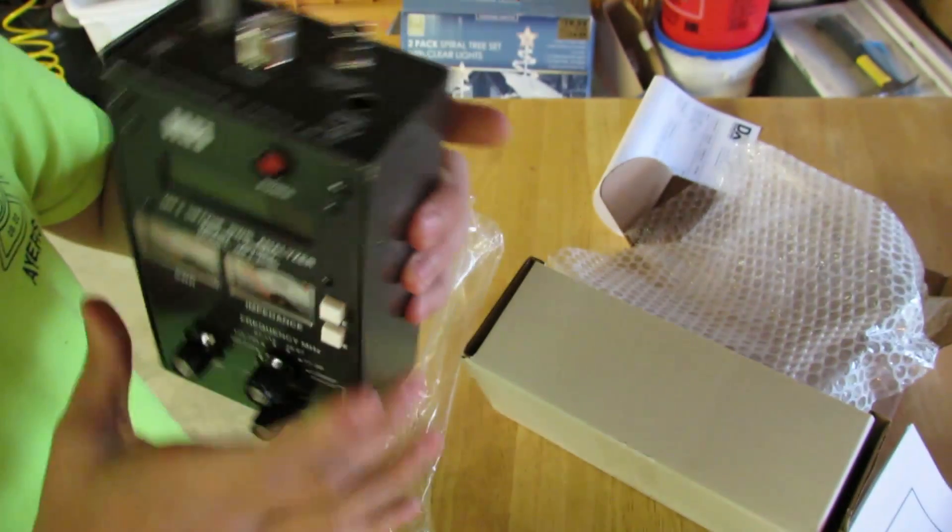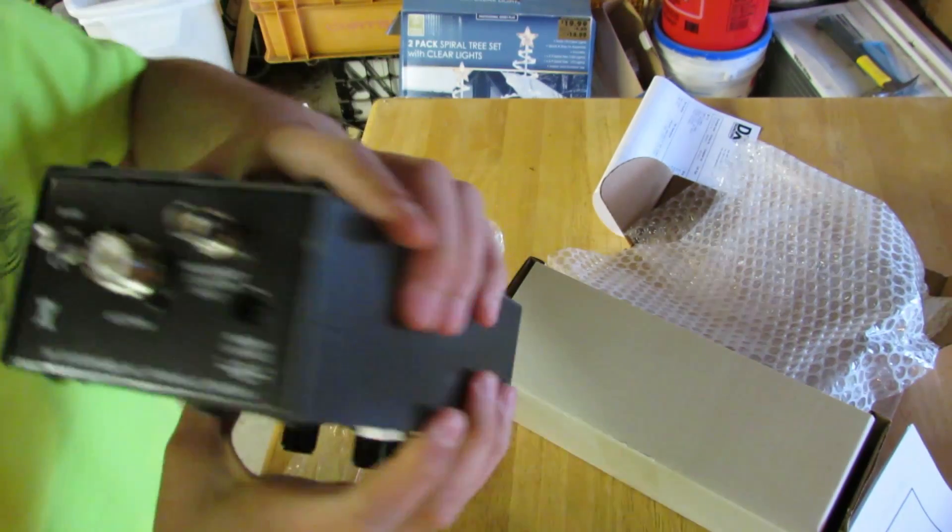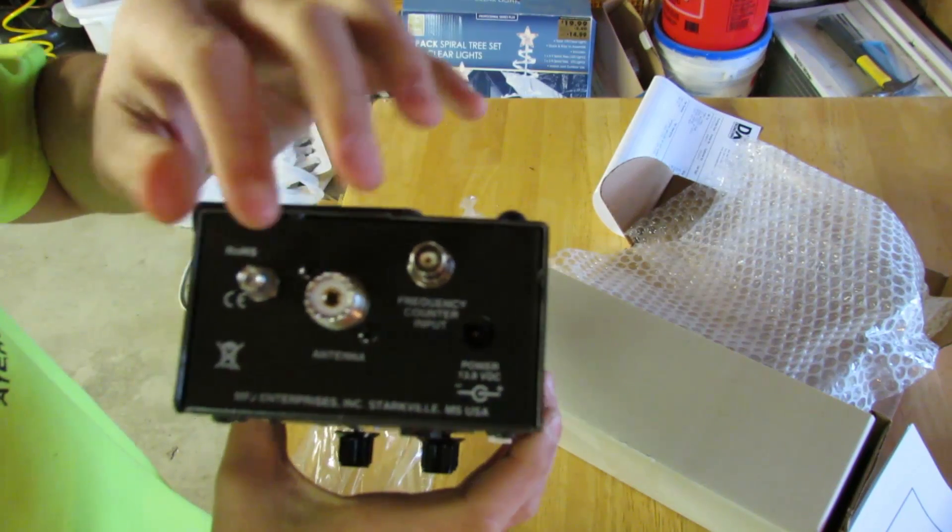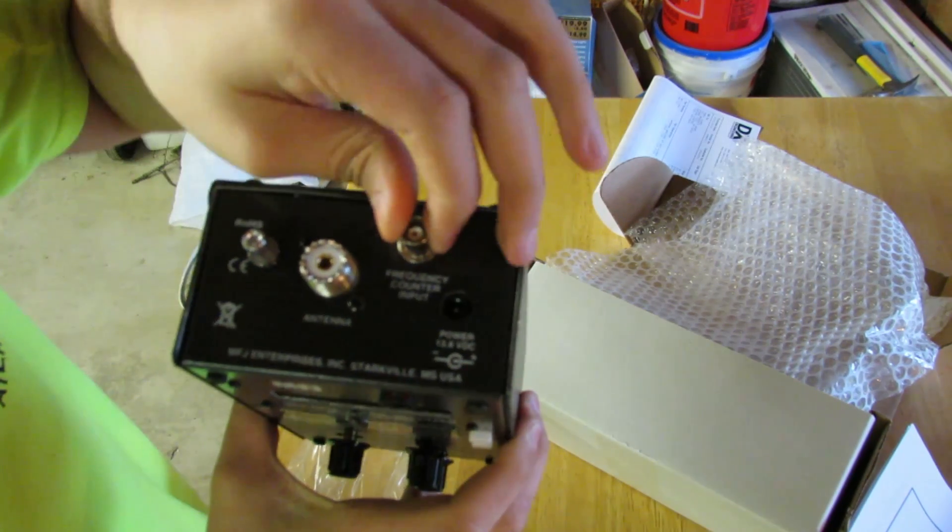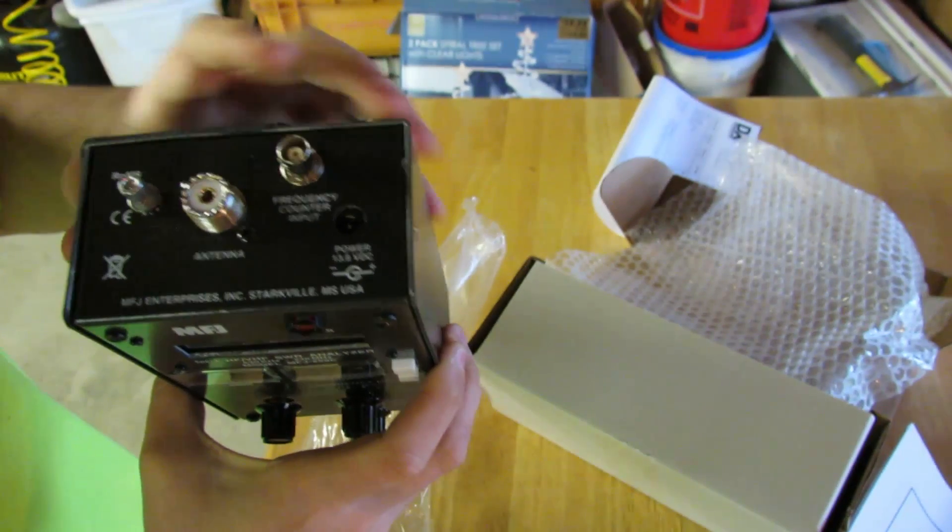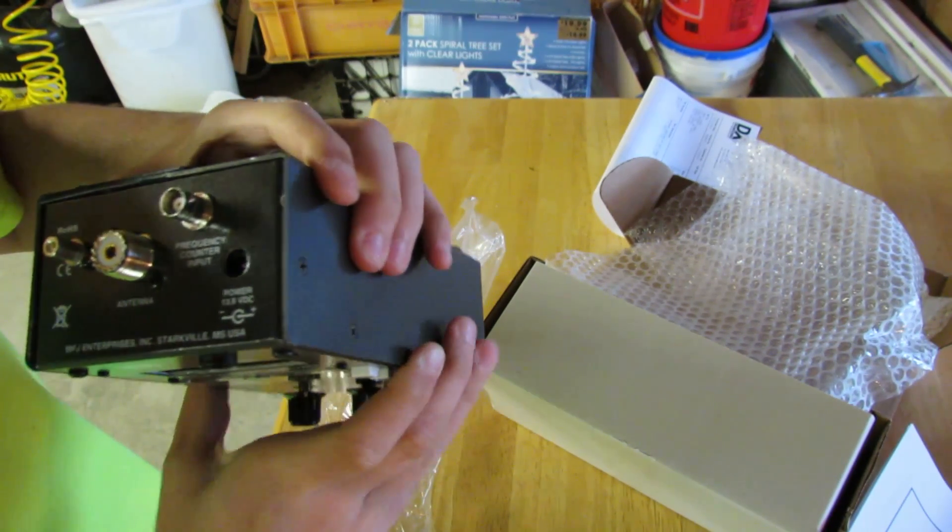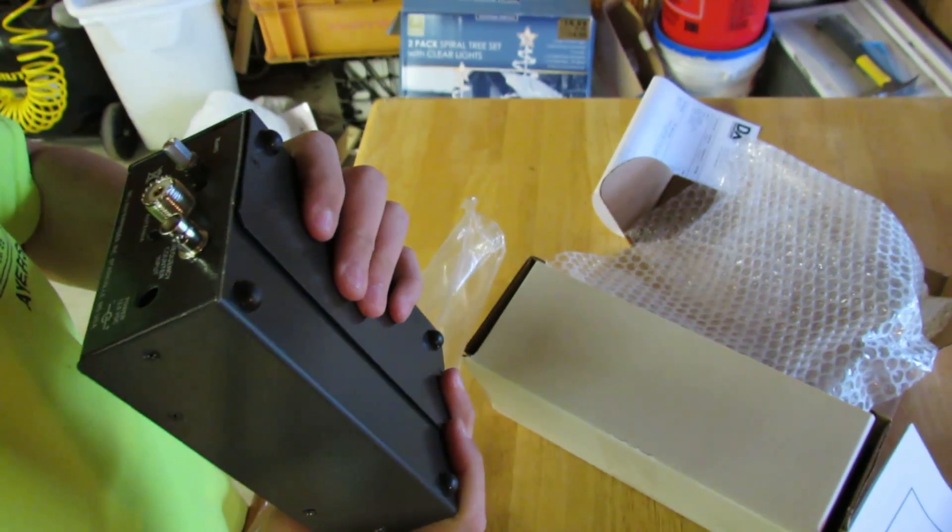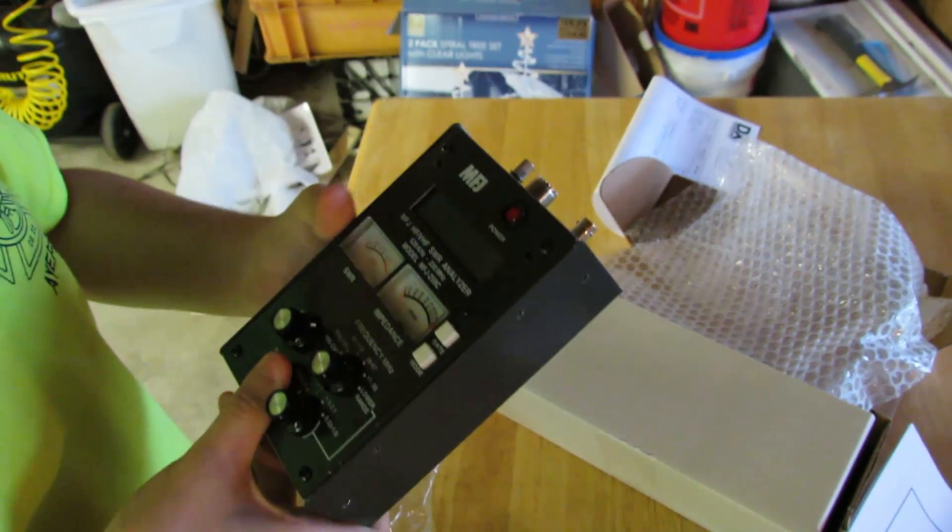Says LY3-17-14-12. So I guess it was made March 17, 2014, 12th batch for the day. Here's the very top of it. You have the rose connector here. Frequency counter input. That's an SO239 connector. And the power. If you have a power cable. That's a DC current I see.